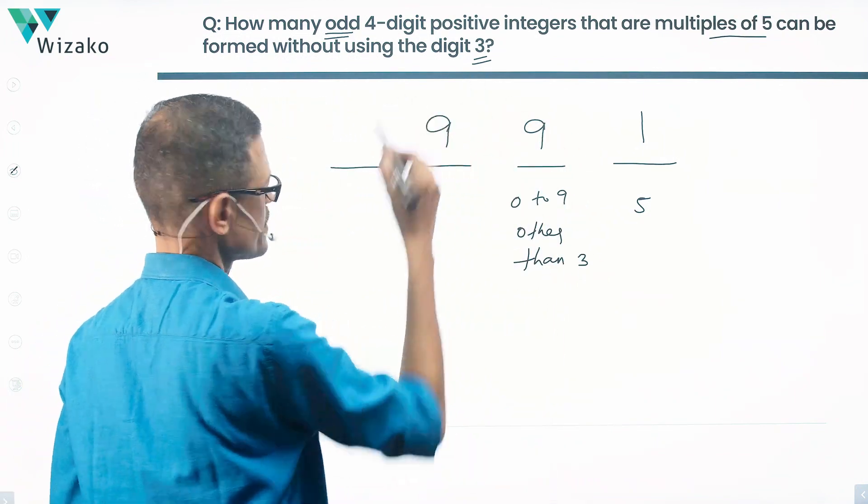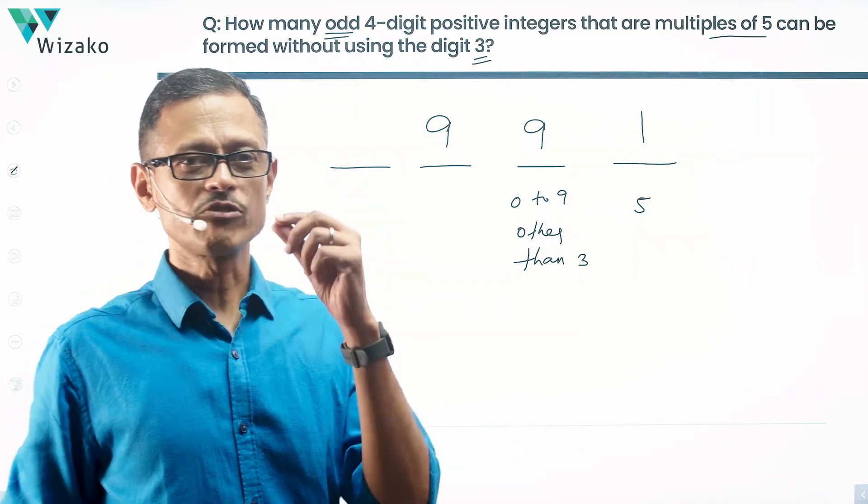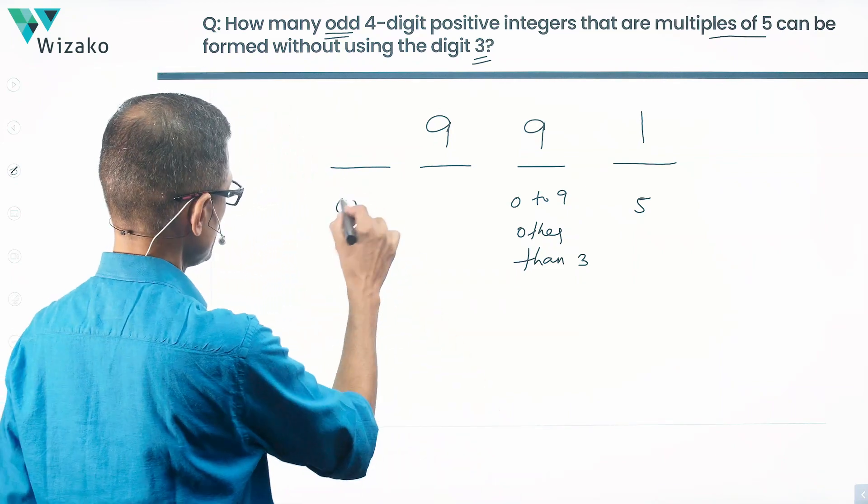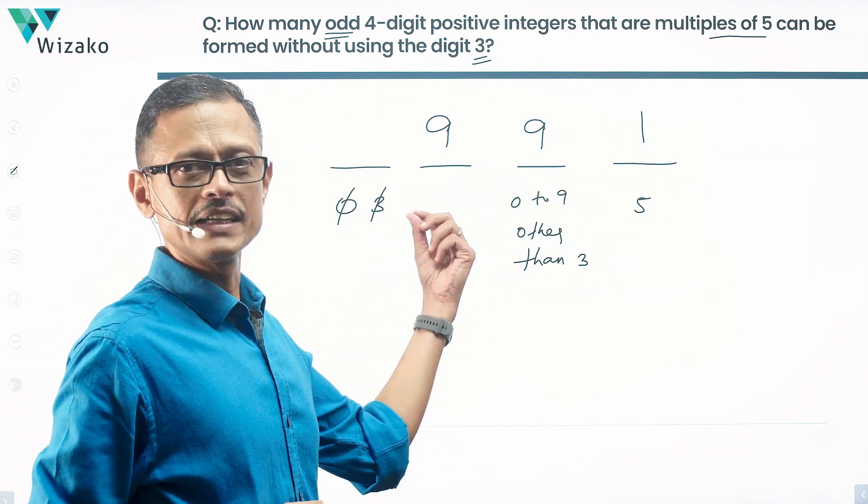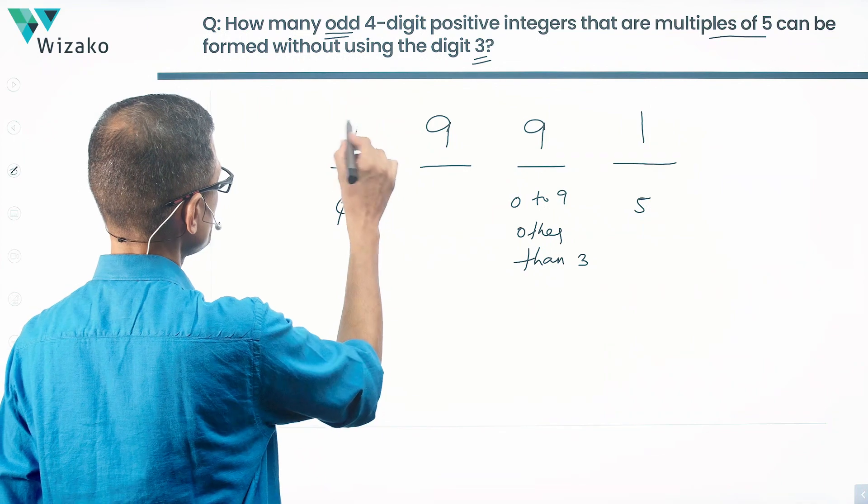Same will hold good for the 100th place, 9 options. The 1000th place, we need to watch out. It cannot be 0, it cannot be 3. So in 0 to 9, we have 10 digits. Two possibilities have been removed, so we're left with 8 possibilities.